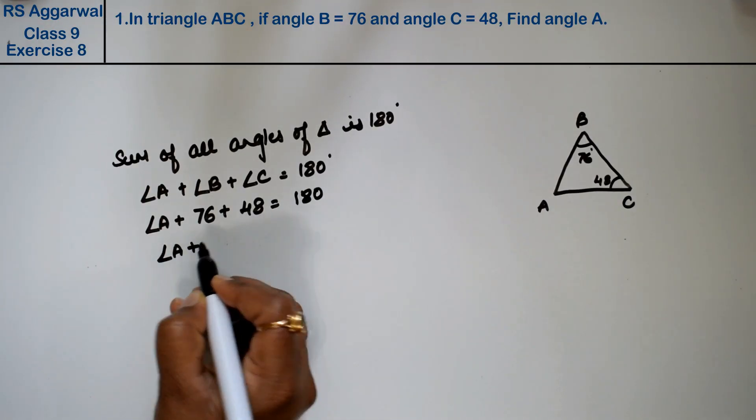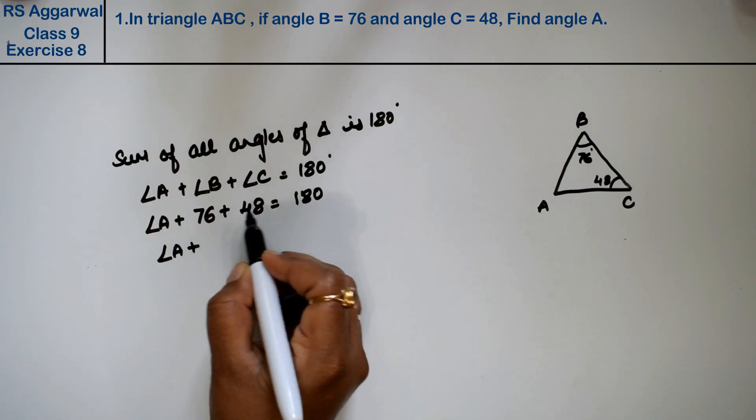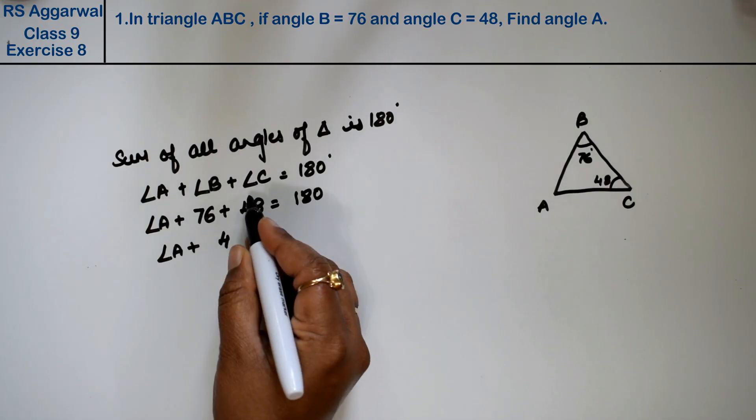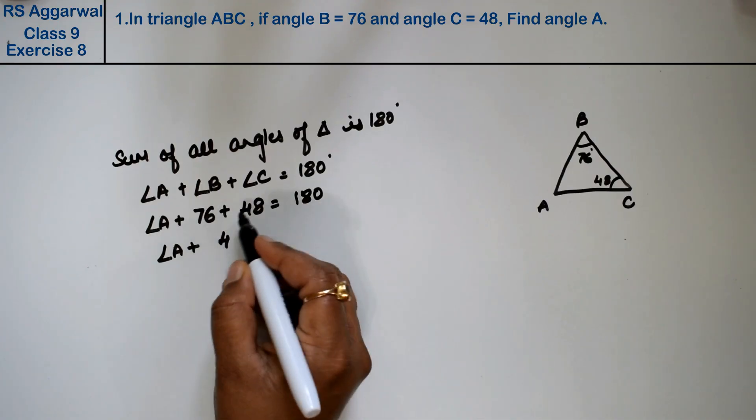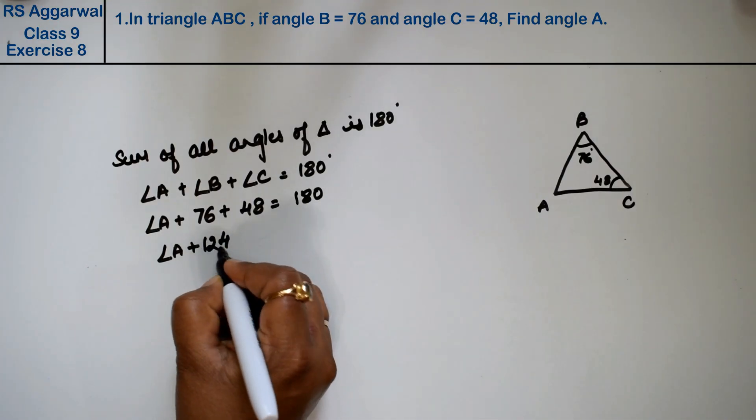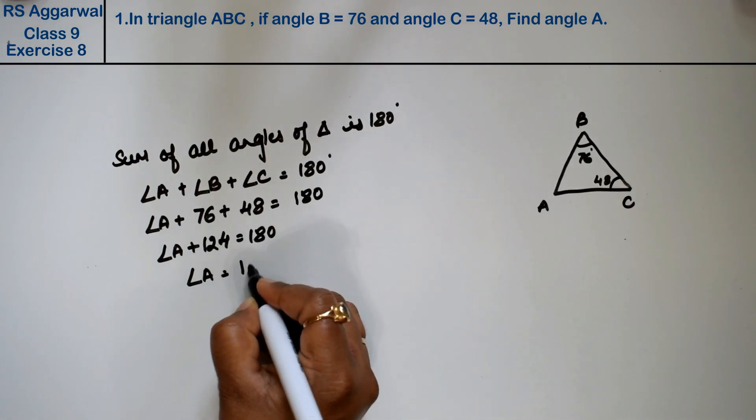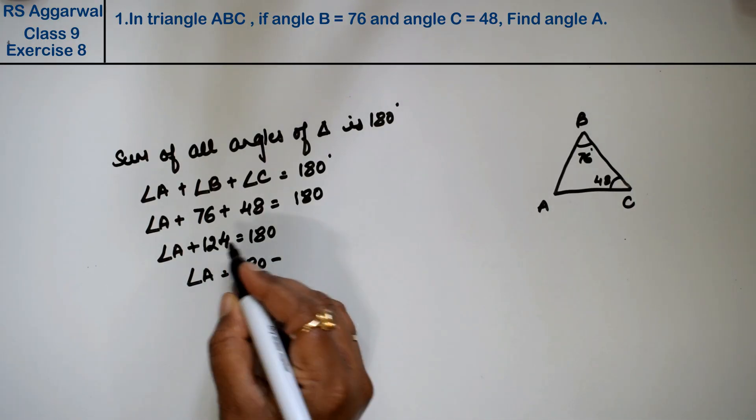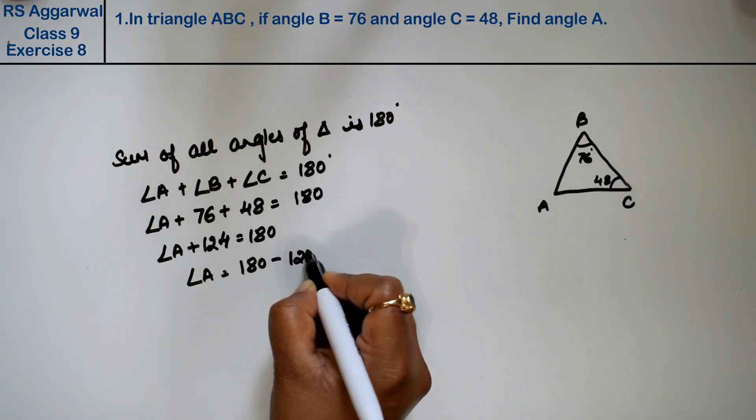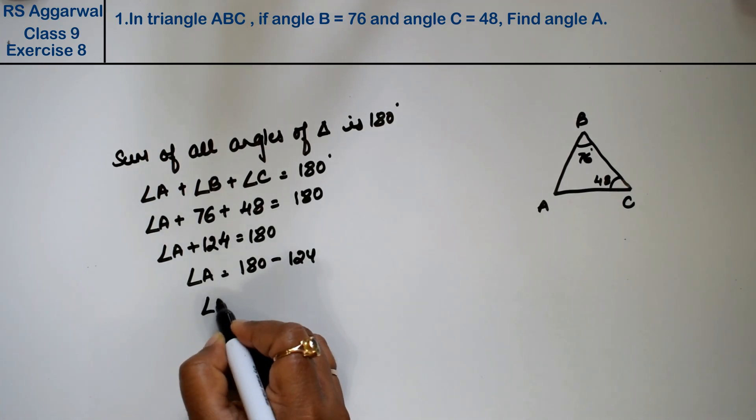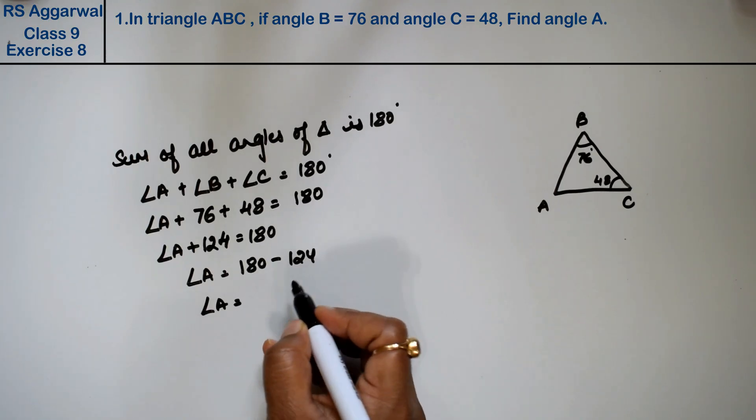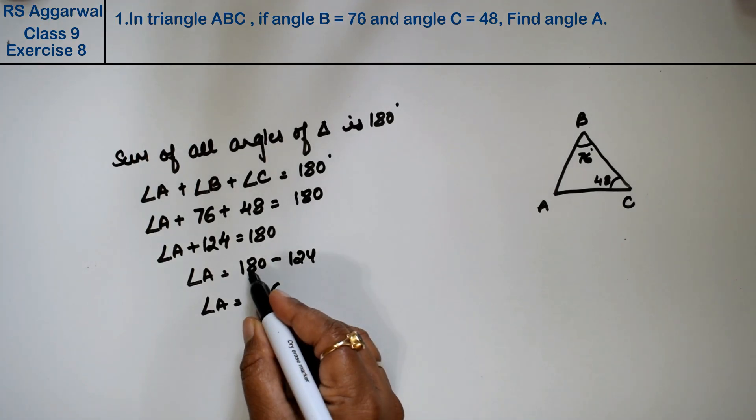Right friends, now angle A. Adding 6 and 8 is 14, carry 1. 8 and 4 is 12, equals 180. So angle A is 180 minus, plus becomes minus. Right friends, so angle A equals 10 minus 4 is 6, 7 minus 2 is 5.